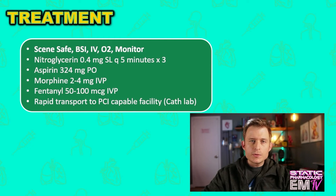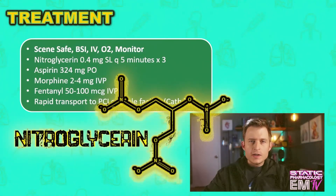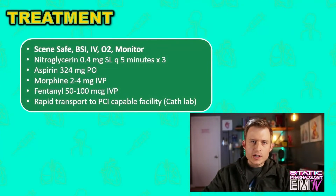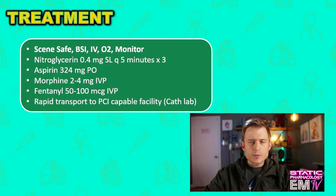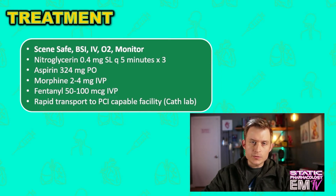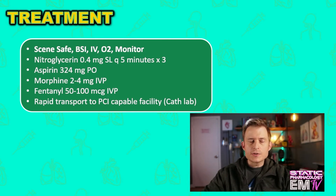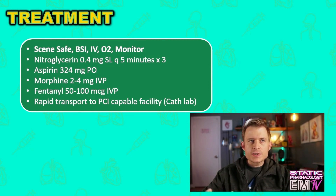My treatment here is going to involve the administration of nitroglycerin. Sublingual tablets are usually the preferred method pre-hospitally, so we'll administer a sublingual tablet of 0.4 milligrams, giving one every five minutes to a maximum dose of three. Remember, it's important to ask the patient if he's taken any phosphodiesterase inhibitors in the last 24 to 48 hours — medications like Viagra, Cialis, or Levitra, otherwise known as ED medications. The administration of phosphodiesterase inhibitors and nitrates will cause a profound drop in blood pressure.